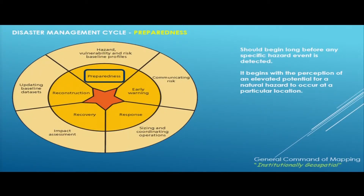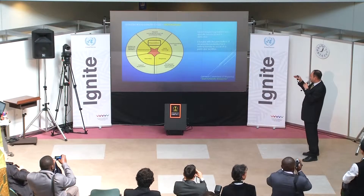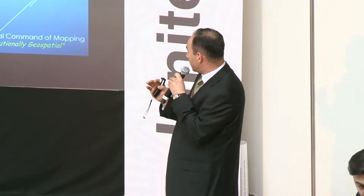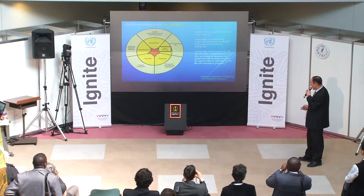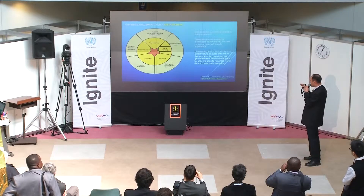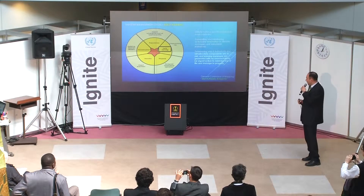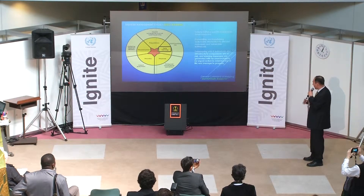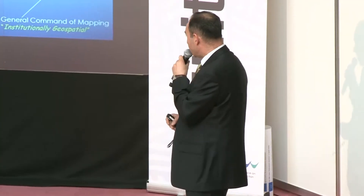The first phase of a typical disaster management cycle is the preparedness phase. It should begin long before any specific hazard is detected, starting with the perception of an elevated potential for a natural hazard to occur at a particular location. The second phase is the early warning phase, which begins before the occurrence of a natural disaster and is initiated after a specific hazard has been observed. This phase involves generating and transferring actionable information to disaster managers and vulnerable individuals, determining which individuals and infrastructure components are at risk, and generating warning messages with recommendations for urgent action to minimize loss of life and property damage.